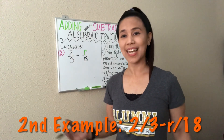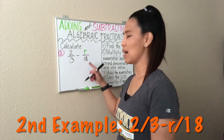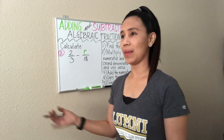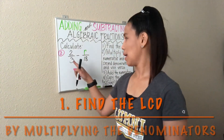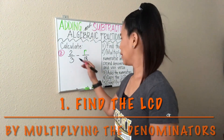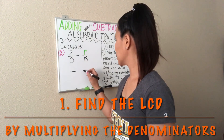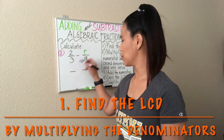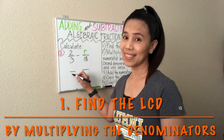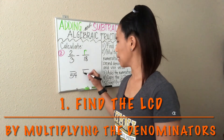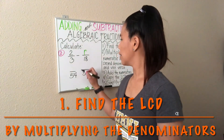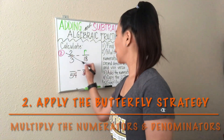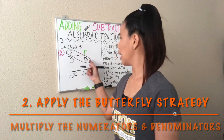Let's have this second example. We have 2/3 minus R over 18. The steps are the same as adding — we have to find the LCD for 3 and 18. The quickest way is to multiply both denominators: 3 times 18 is 54. So we put 54 as the common denominator, and note that this is a subtraction. Now we apply the butterfly approach by multiplying the first numerator by the second denominator.